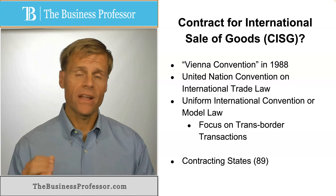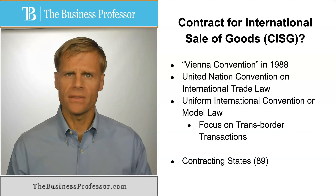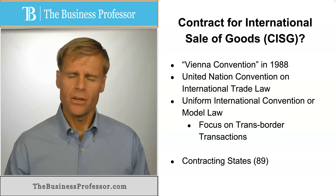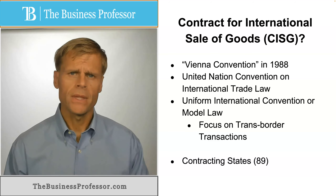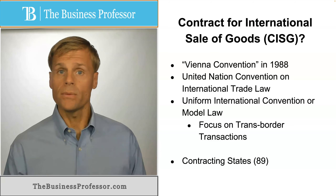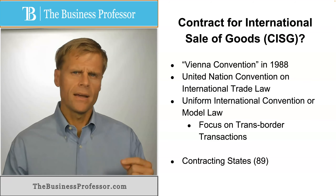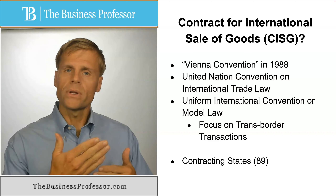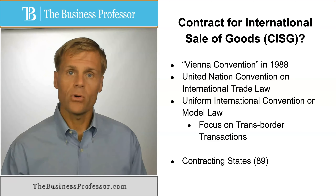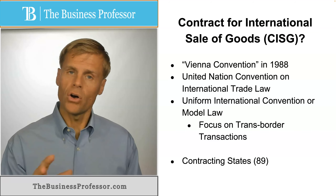What is the Contract for International Sale of Goods, or CISG? To start with, this is a model law used in international transactions to provide the terms of agreement between the parties. If we're going to do a contract in the United States, generally the local law will apply — the same way in most other countries. The scenario becomes more complex if you're going to have agreements between parties from different countries, and you need to designate the rules that will apply to the interpretation and formation of that agreement.